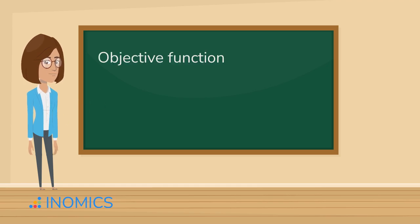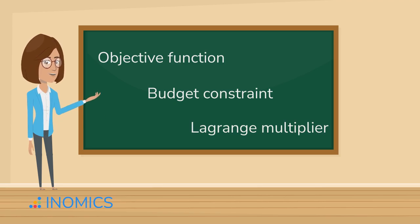When we combine the objective function, the budget constraint, and the Lagrange multiplier, it looks like this.